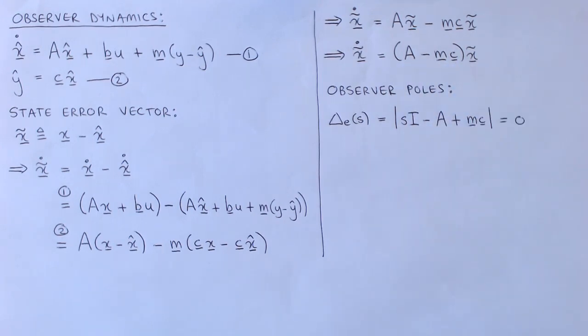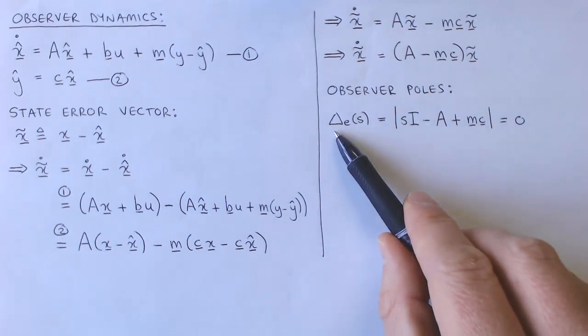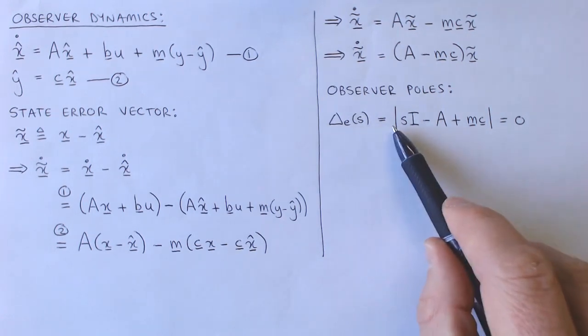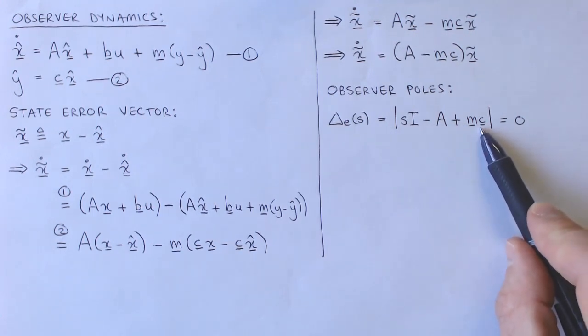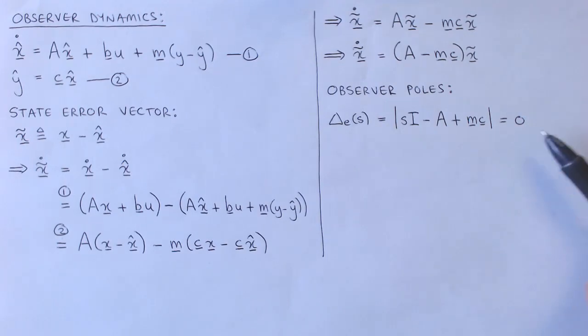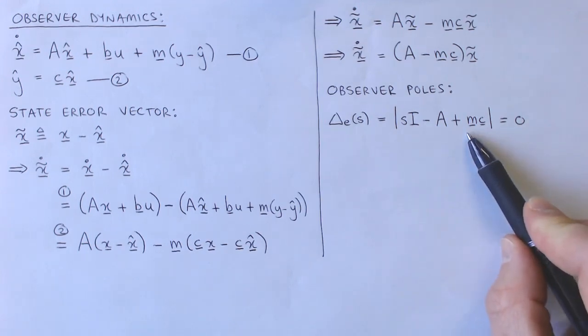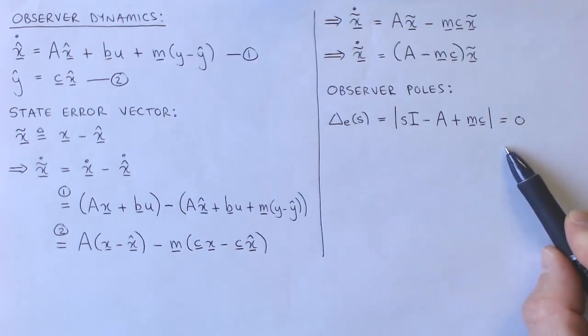We can therefore calculate the poles of the observer by setting up the characteristic equation of the observer as the determinant of SI minus the new A matrix equal to zero and solving for S. Remember that these poles describe the dynamics of the state error, or the difference between the estimated and actual states.